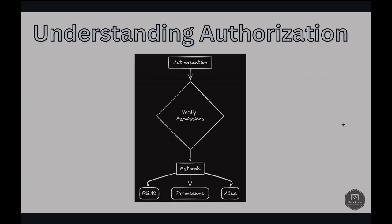On the other hand, authorization determines what areas of the club you are allowed to access once you're inside. It's like a VIP pass that grants access to exclusive areas. Role-based access control, permissions, and access control lists are common methods of authorization. Once authenticated, authorization kicks in to grant access rights based on your identity.